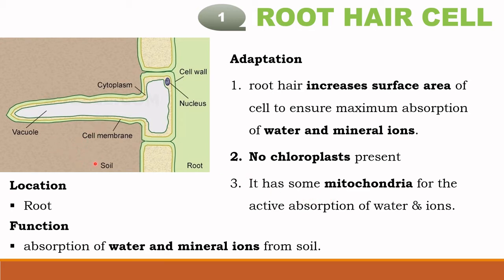The root hair cell has some mitochondria for the active absorption of water and ions, usually through active transport. The water and ions present in the soil are taken into the cell. This root hair cell is found in the root, and its function is to absorb water and mineral ions from the soil.